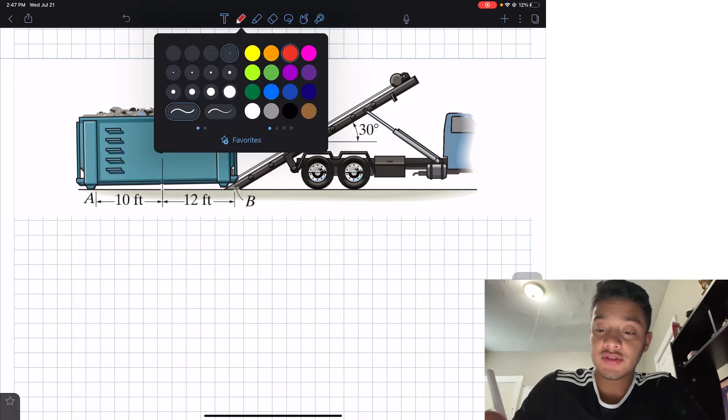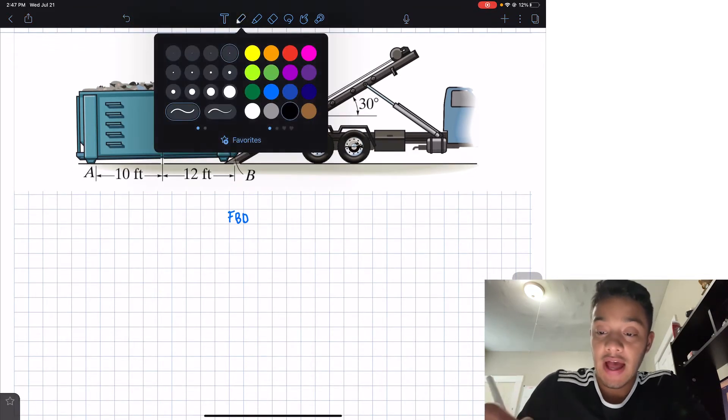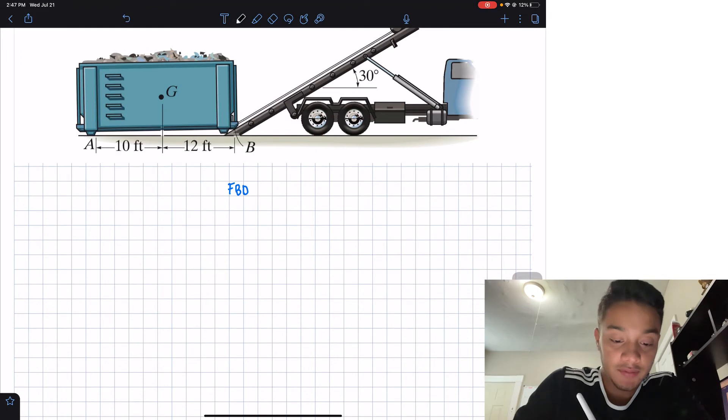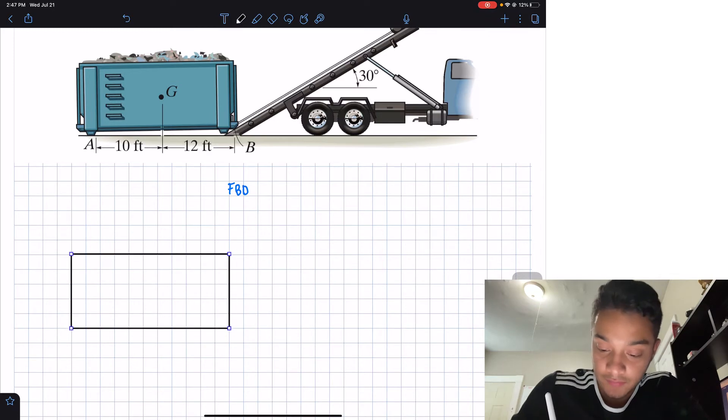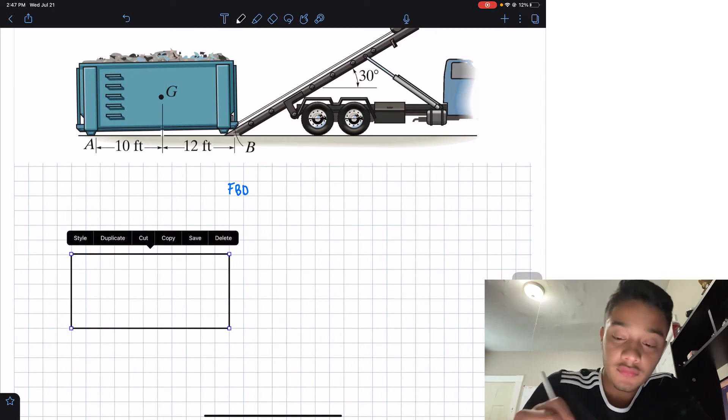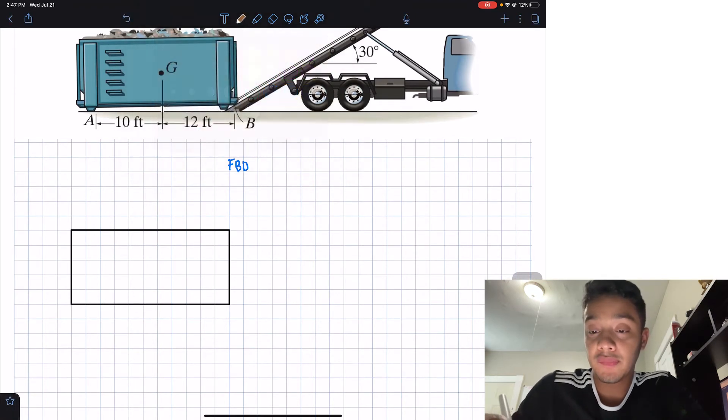So let's try again to do our free body diagram in here, a little bit more clear. And what we have is that we will have our beam which looks something like this. Now that we have our beam, let's focus on our point B. So our point B is in here, so this is my point B.